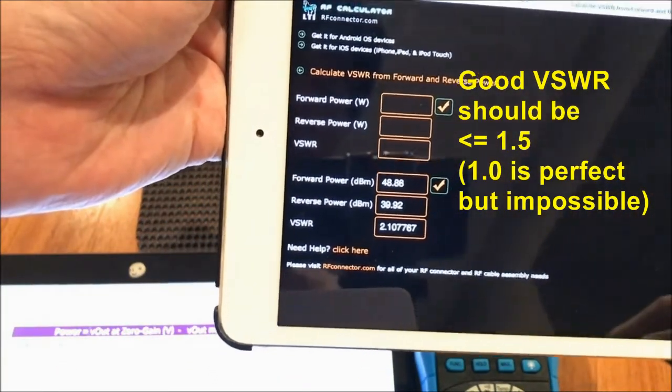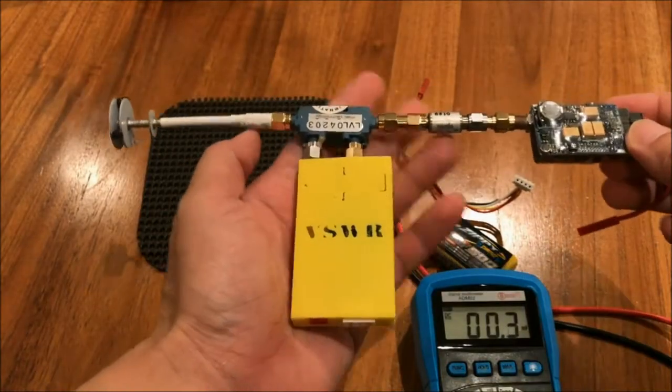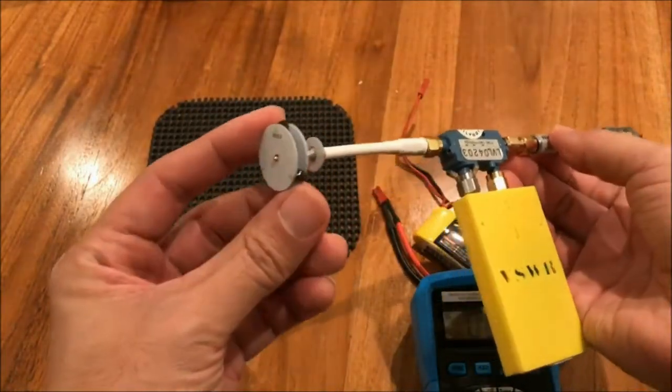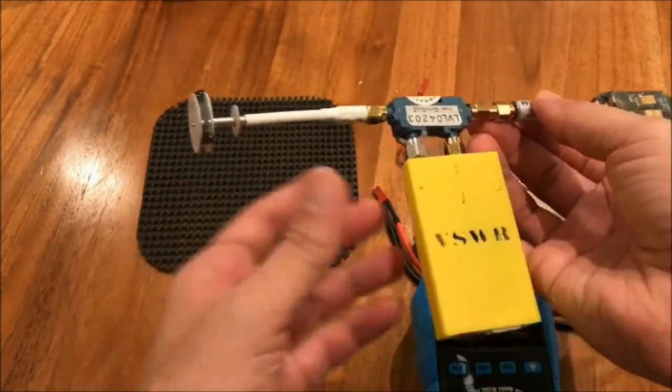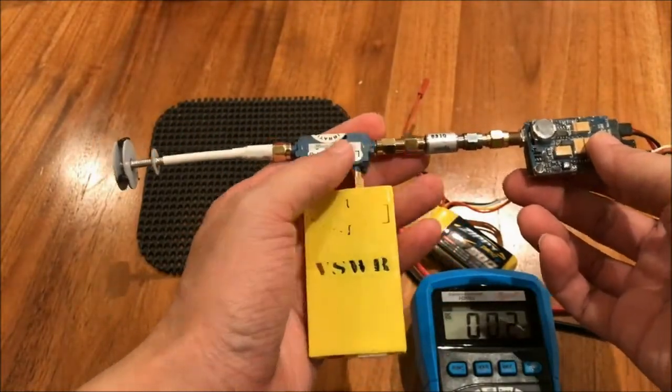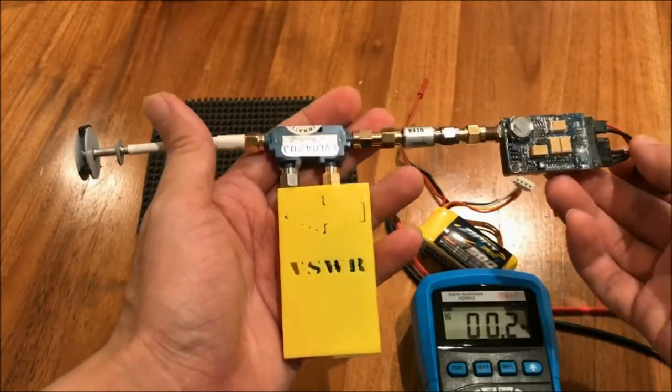Well, not very good. So basically with this method, you could do VSWR readings of any 5.8 GHz antenna, such as the Pagoda antenna here. And then you can compare which antenna in your collection has the best VSWR, and that will give you better video range as you're flying FPV.